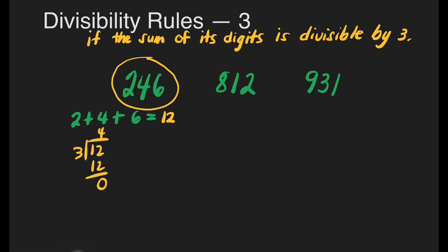Let us check 812. 8 plus 1 plus 2 is equivalent to 11. 11 is not divisible by 3 because 3 times 3 is 9, and we have a remainder of 2. So 812 is not divisible by 3.